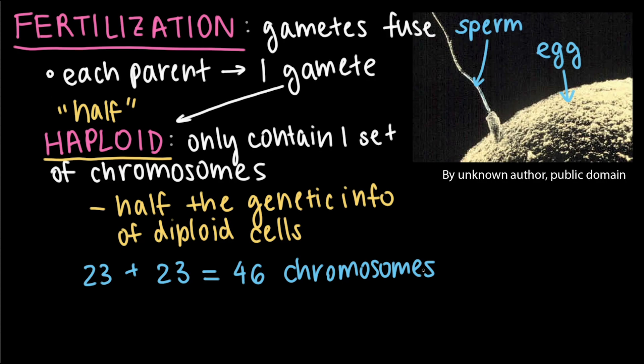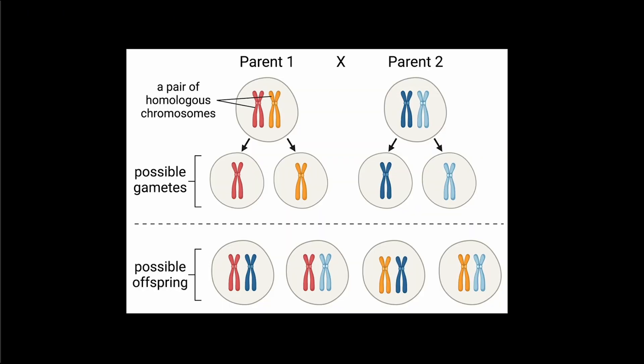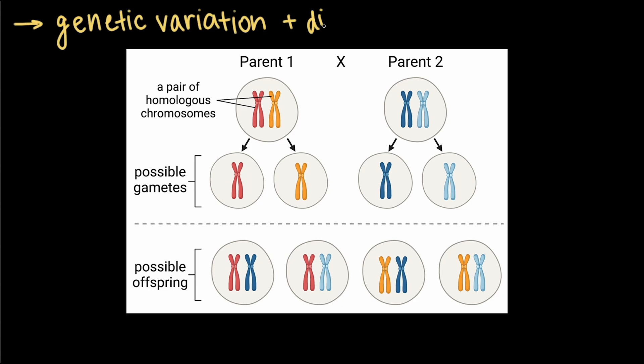So why is sexual reproduction so important? Well, not only does it allow organisms to produce offspring, but it also creates genetic variation and diversity. The reason that offspring have different traits compared to their parents, and that one sibling looks different from another, can be attributed to sexual reproduction.